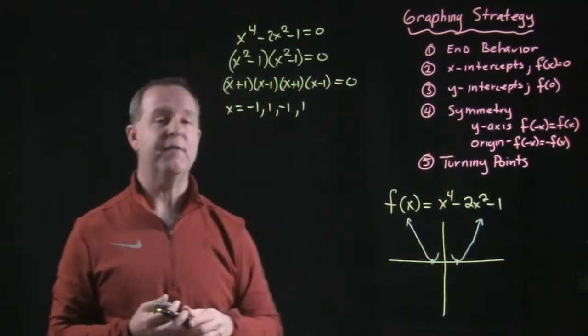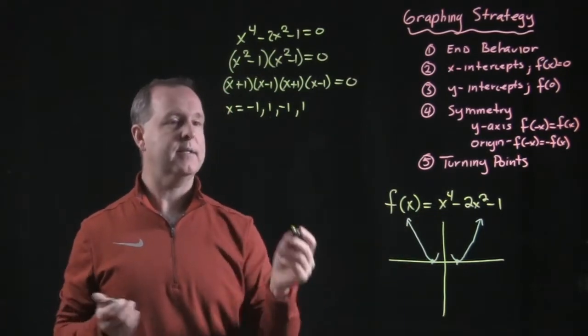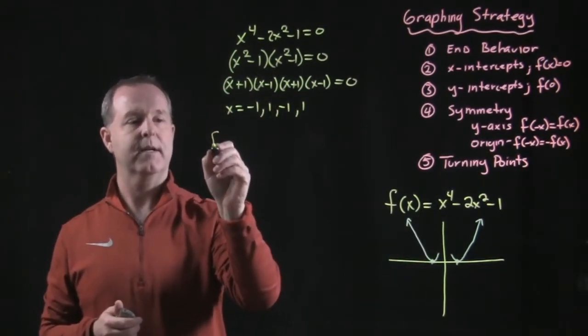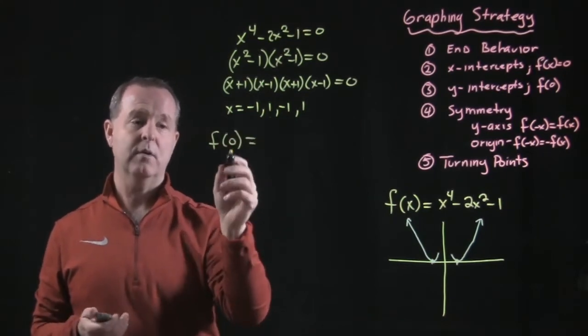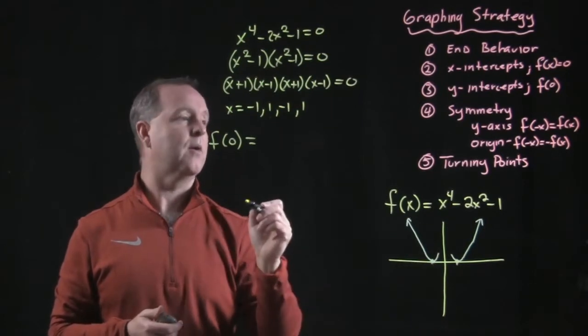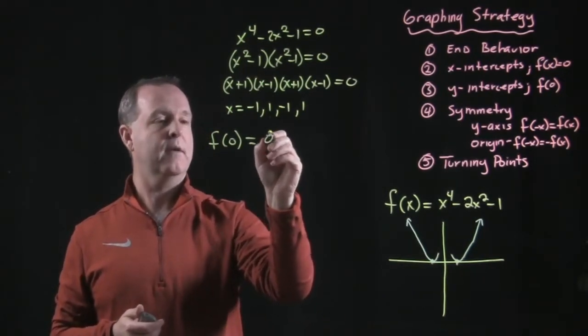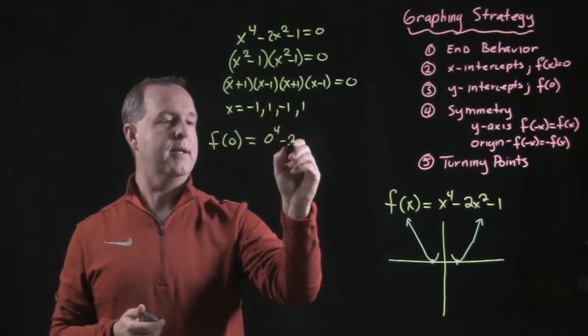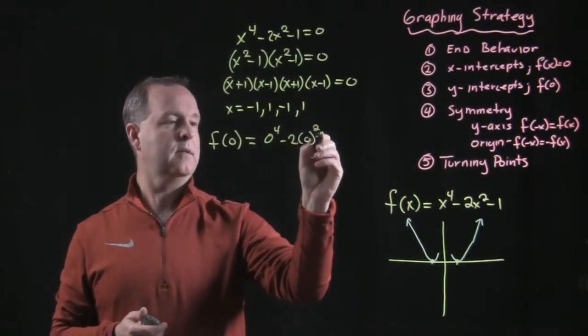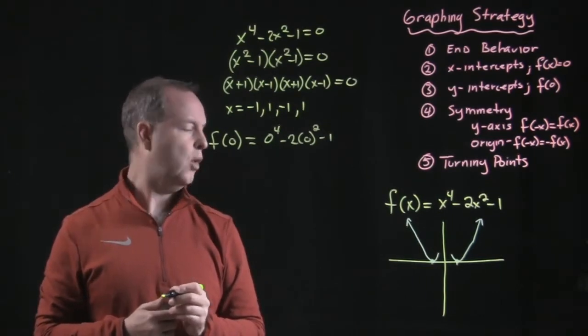Step three, let's find out where it crosses the y-intercept at. How do we determine that? Well we evaluate the function at zero. Why at zero? Because that's the value of x on the y-axis is at zero. And so our function becomes zero to the fourth minus two times zero squared.